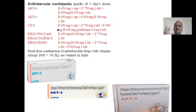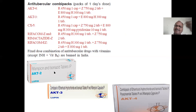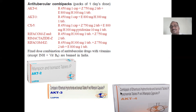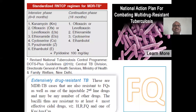Since one drug is not sufficient, pharmaceutical companies started preparing combination kits. AKT-2 contains two drugs: rifampicin and isoniazid. As resistance developed, AKT-3 was introduced with three drugs: E (ethambutol), H (isoniazid), and R (rifampicin). Then AKT-4 with four drugs: R, Z, E, H. Also combinations like Rifacom prepared by Lupin company. This is called multi-drug resistance tuberculosis.